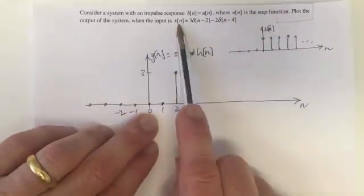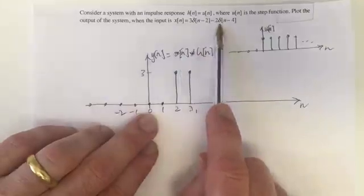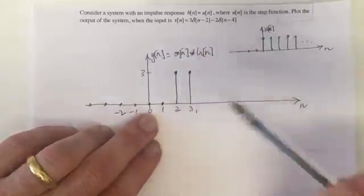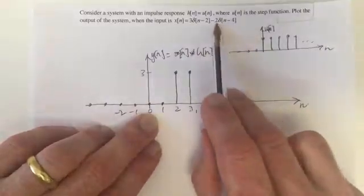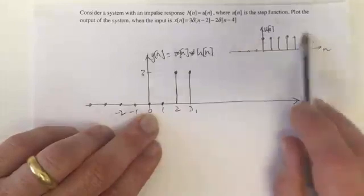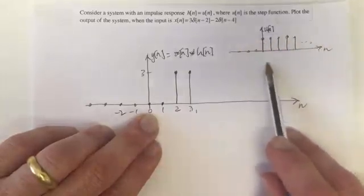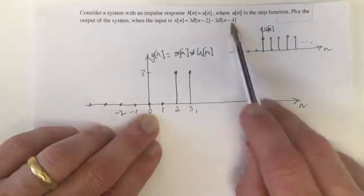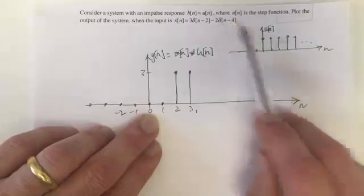But our input has a negative delta function occurring at time n equals 4. So at n equals 4 we've got negative 2 times this response. So this response is going to happen negative times 2 starting at time n equals 4, or shifted to time n equals 4.